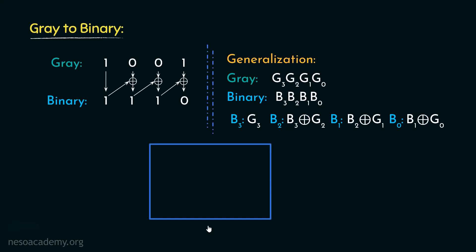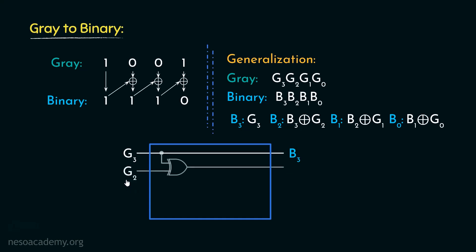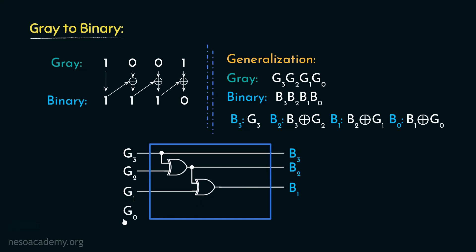Let's construct the gray to binary circuit. G3 directly derives B3. Since G3 and B3 are the same value, XORing G3 with G2 gives B2. Taking the output of that XOR gate and XORing with G1 gives B1 — this is XOR between B2 and G1. Similarly, XORing the output of that gate with G0 gives B0. This circuit converts any 4-bit gray value to its binary equivalent.